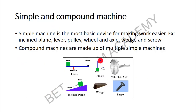Let us look at simple and compound machines. A simple machine is the most basic device. For example, an inclined plane is also a machine — we never think of it as one, but it makes work easier. Whichever device makes work easier is called a machine. So we use inclined planes, for instance when coolies push carts up ramps. We also use levers and pulleys — lever and pulley are also simple machines.